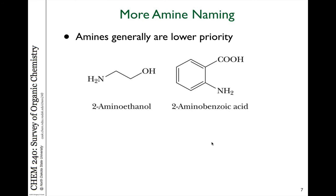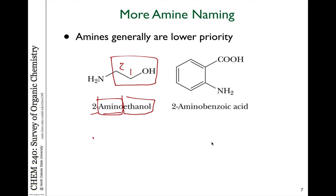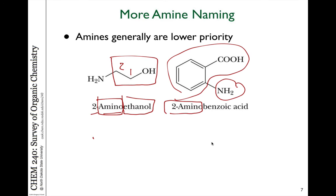Relative to other functional groups, amines tend to get lower priority. Alcohols get the highest priority in molecules that contain both. For example, the parent molecule here is ethanol because the alcohol gets priority and gets the number one carbon — making this 2-aminoethanol. When we use the amine name as a substituent, we use the word amino. Here the parent molecule is benzoic acid, with a 2-amino group on the second carbon.